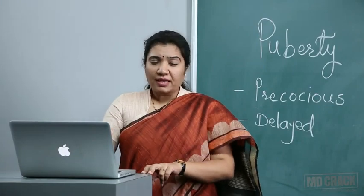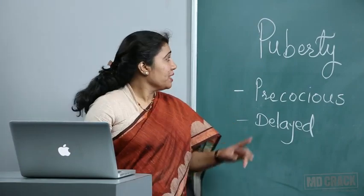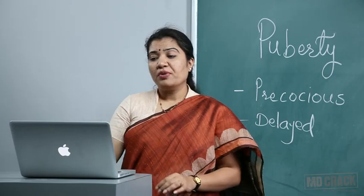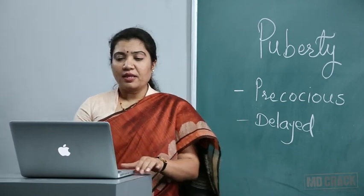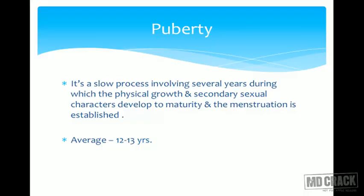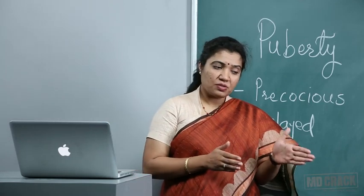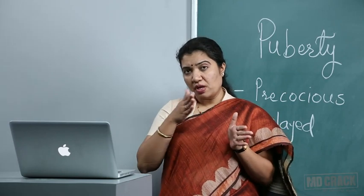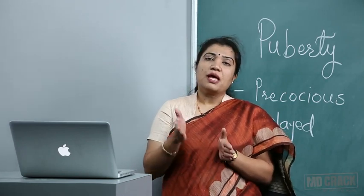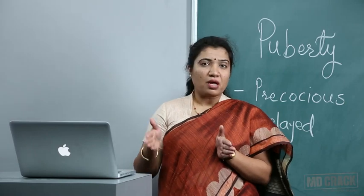Puberty is a slow process involving several years during which physical growth and secondary sexual characteristics develop to maturity and menstruation is established. This period starts with a growth spurt, gradually involves formation of secondary sexual characteristics, and ends with menarche in females.